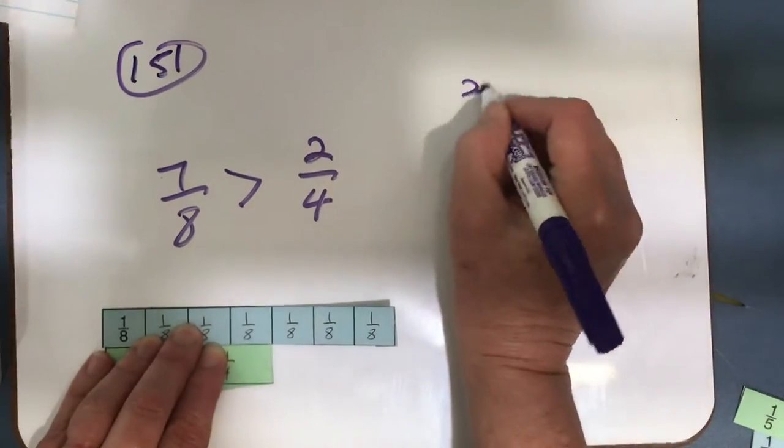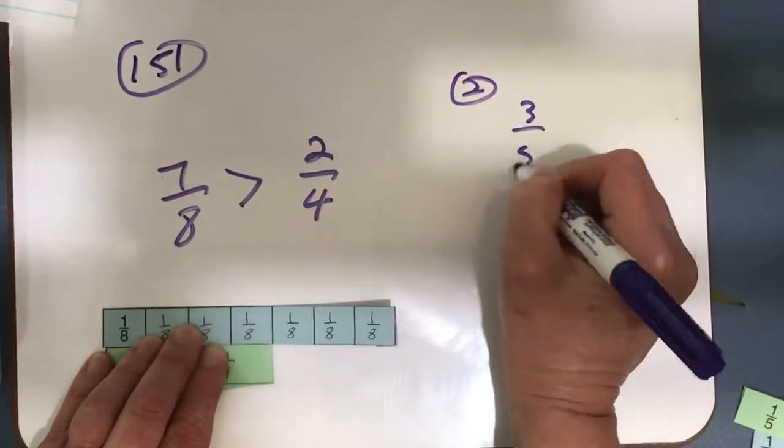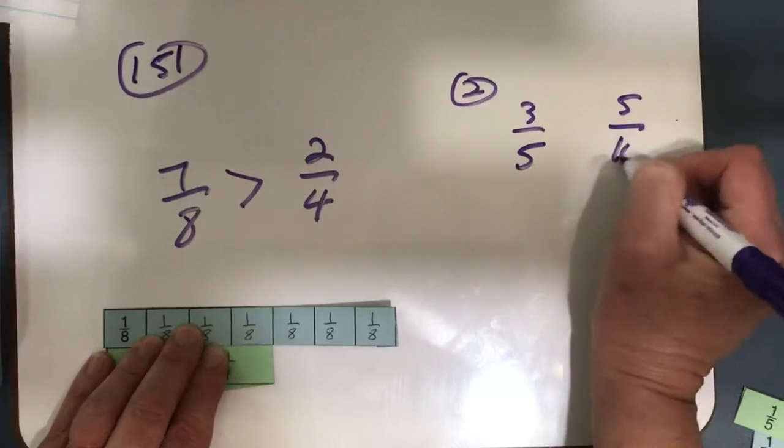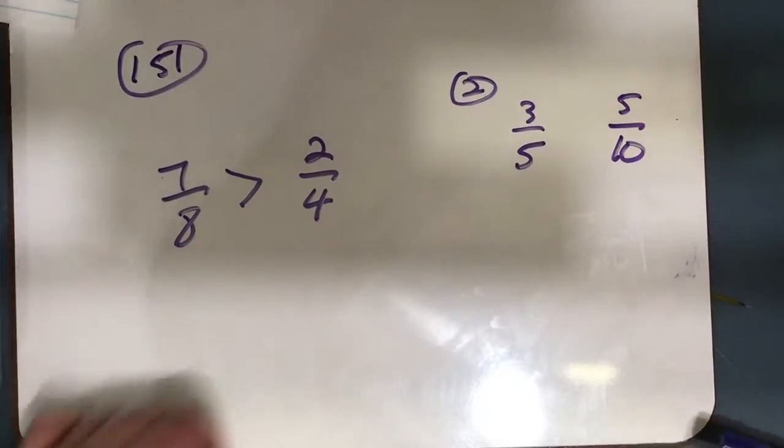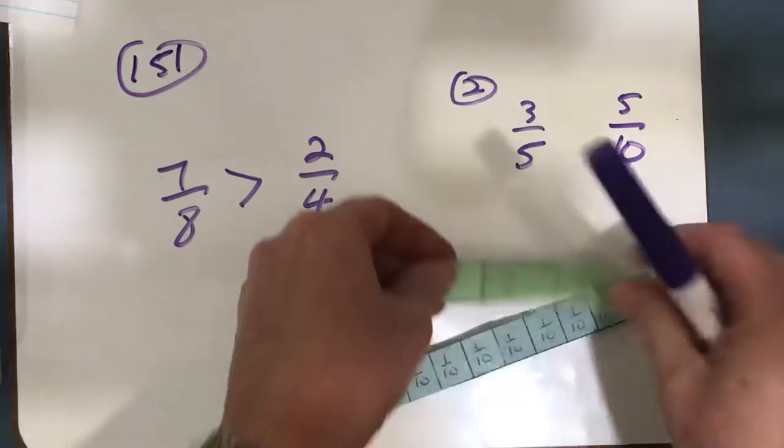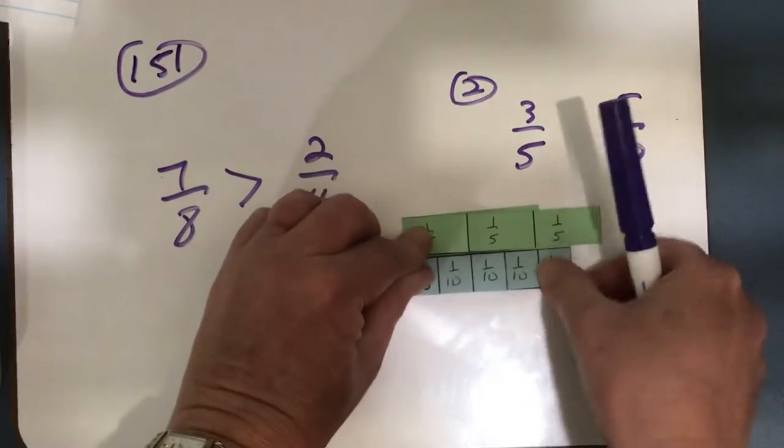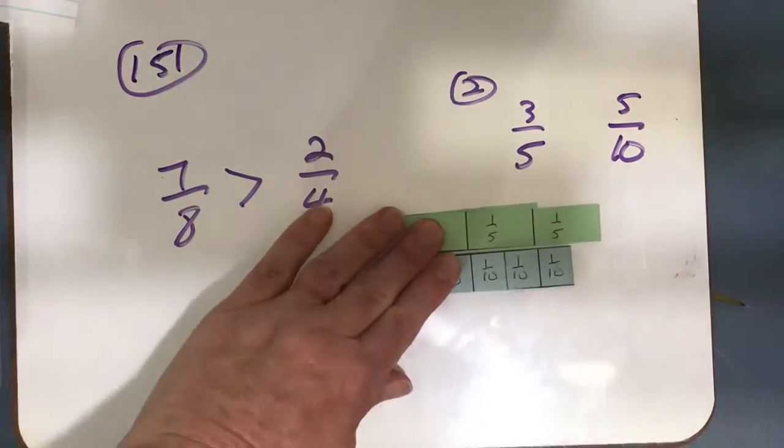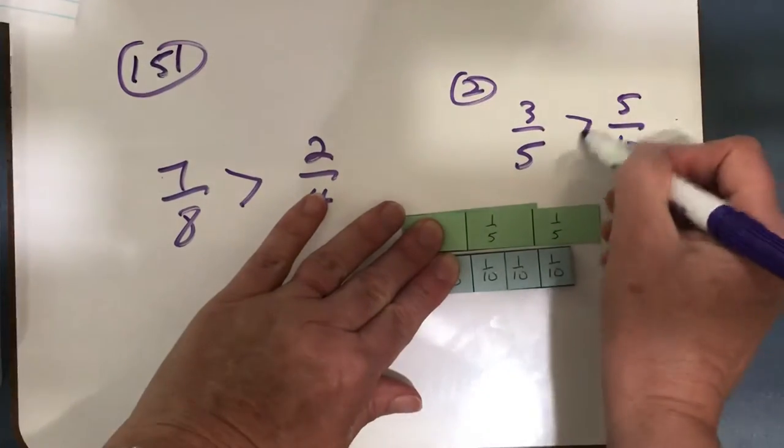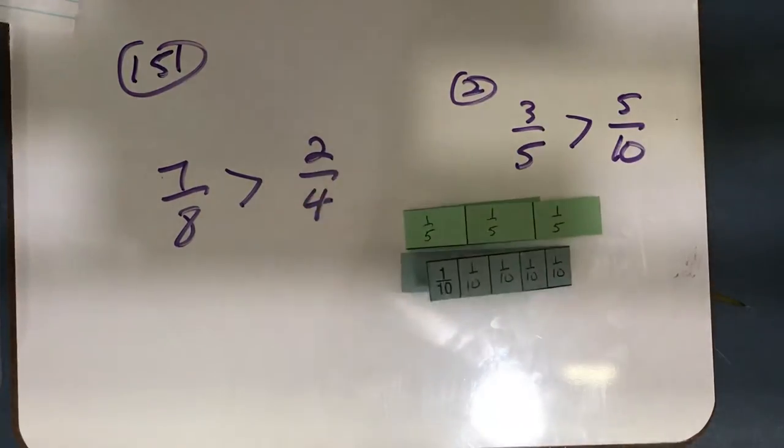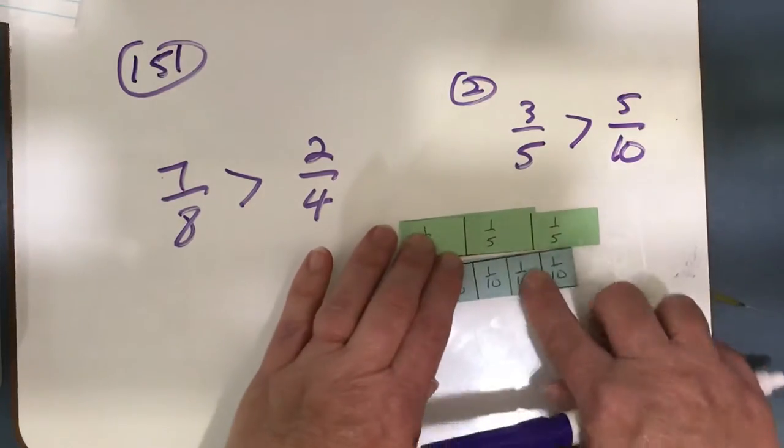Now let's look at number two. Number two says 3 fifths compared to 5 tenths. So I get out my fraction strips here, here's 3 fifths, and then here's 5 tenths, and I can see that 3 fifths is greater than 5 tenths. That's how you can do it with fraction strips. You just fold them back and compare the actual fractions.